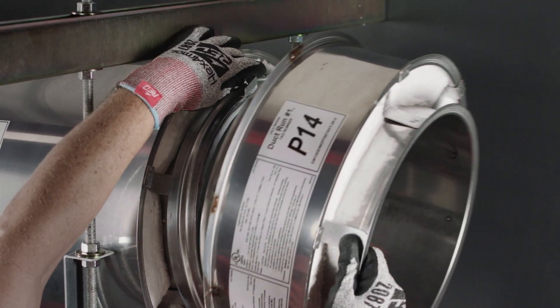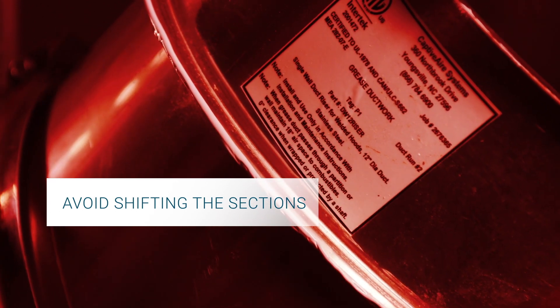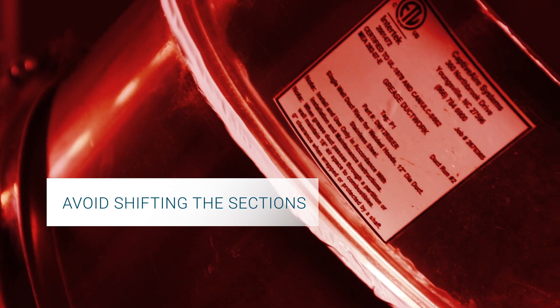Join the two flanged ends of the duct sections together. Take care that the sections do not shift during assembly. If the sections shift, the flanged ends will not seal properly.